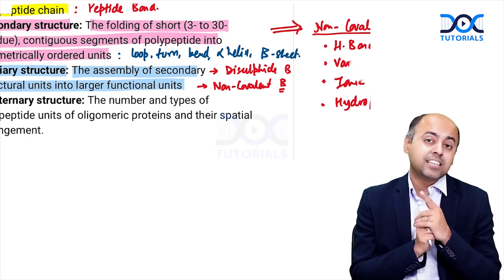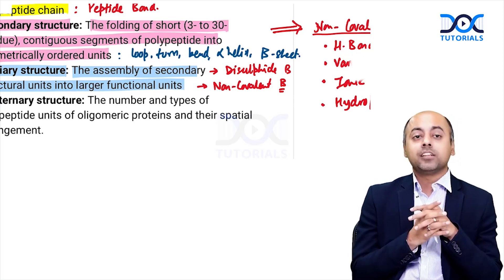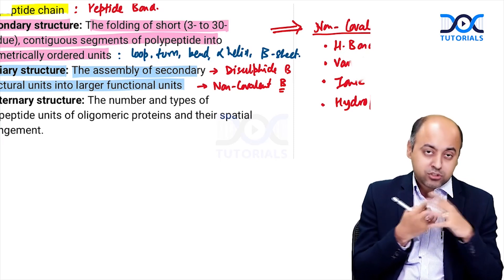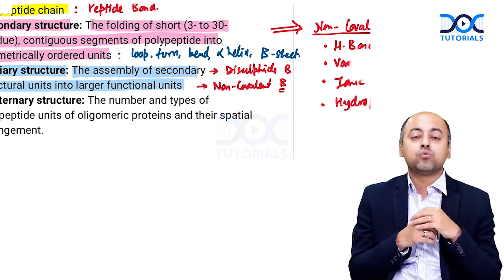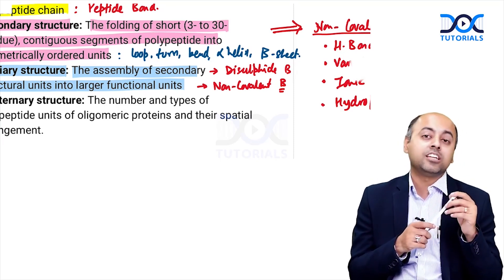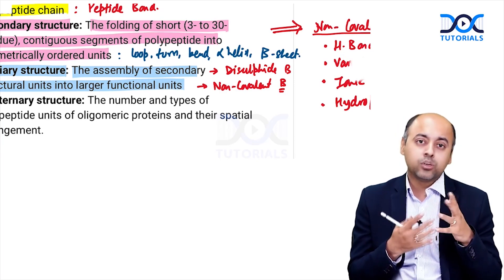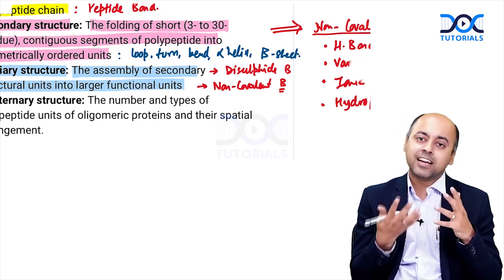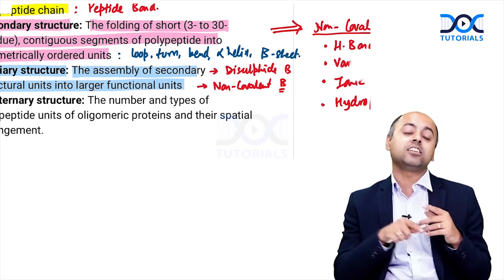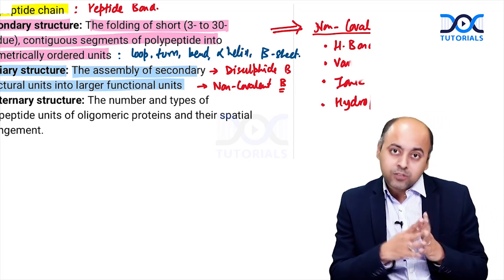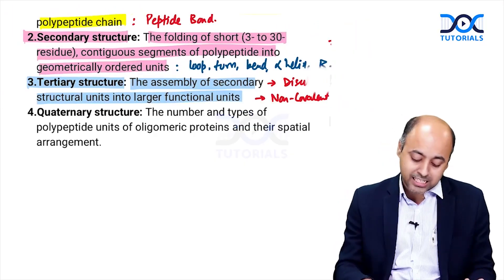When you do denaturation, the tertiary structure also gets disrupted, although the disulfide bonds remain intact. To break the disulfide bond you need special agents — for example, mercaptoethanol can be used to break disulfide bonds when doing SDS-PAGE. In routine denaturation with slight heating, the secondary and tertiary structure get disrupted and non-covalent bonds are destroyed, but the disulfide bond remains intact.